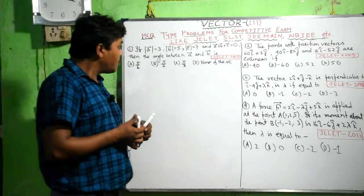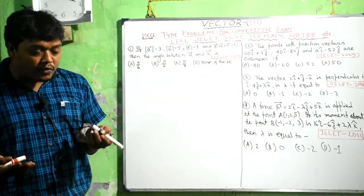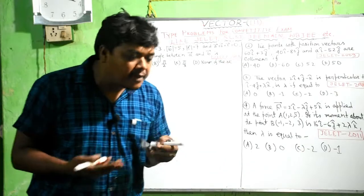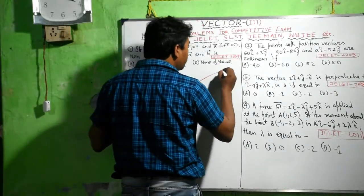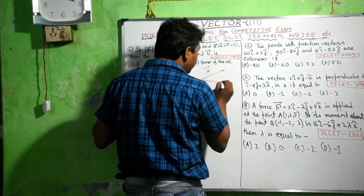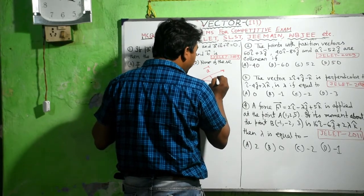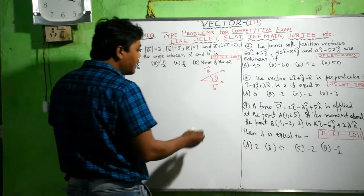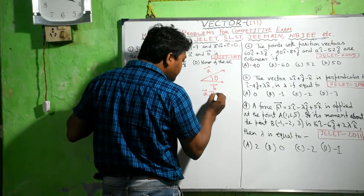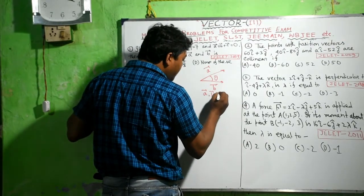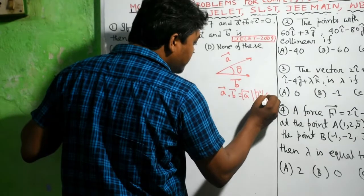Most of the question is: how to find the angle between the two vectors. If A and B are given to you, and the angle between them is theta, then by definition of dot product A dot B equals mod A times mod B times cosine theta.